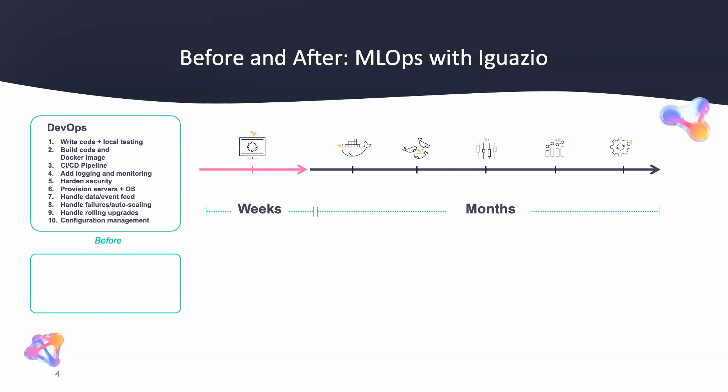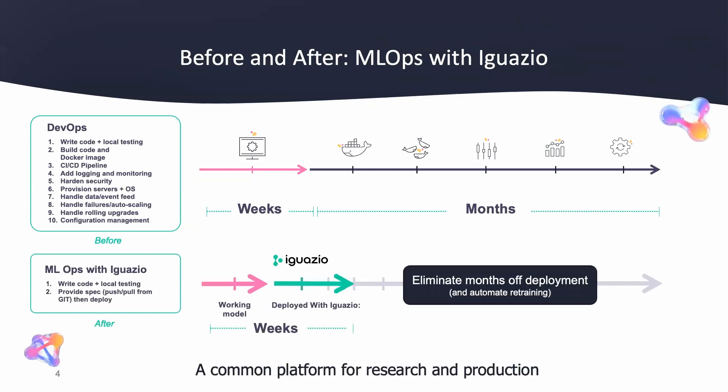So before Iguazio, it may take you a few weeks to develop your model, but it could take up to a few months to actually get it into production. With Iguazio, we're eliminating months off of your deployment time and also automating the retraining process.